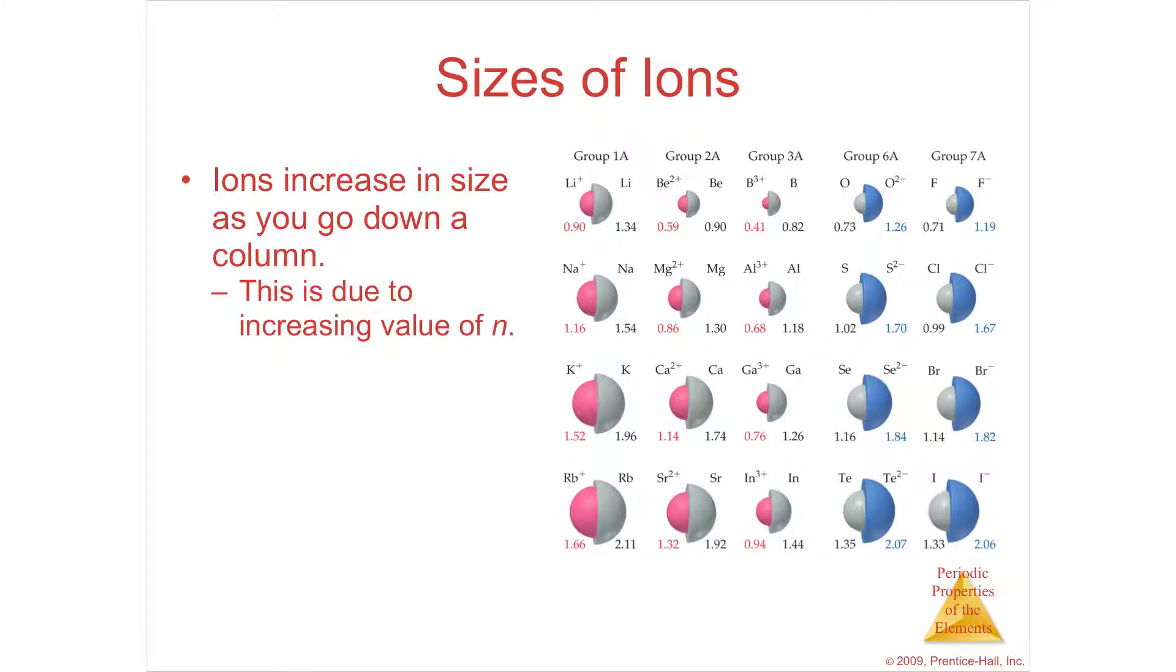With ions, cations or anions, as you go down the group, it's going to get bigger because you're increasing shells. As you go across, it's going to get smaller. The cations are going to get smaller due to effective nuclear charge. These are going to get smaller as effective nuclear charge. But remember, fluorine and oxygen have the same number of electrons as neon. So these are going to be bigger than the neons. These have the same as neons, and so these are going to be smaller than the neons.